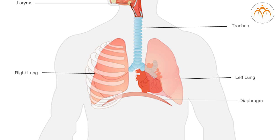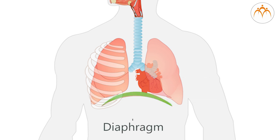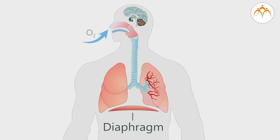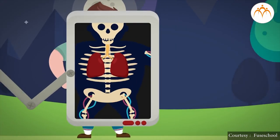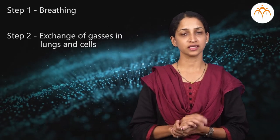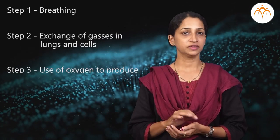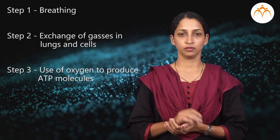The diaphragm is located at the base of the thoracic cavity. It is a muscular partition that moves upwards and downwards during respiration. Now we will study the actual mechanism of respiration in brief. This can be divided into three steps: Step 1 - breathing; Step 2 - exchange of gases in lungs and cells; Step 3 - use of oxygen to produce ATP molecules.